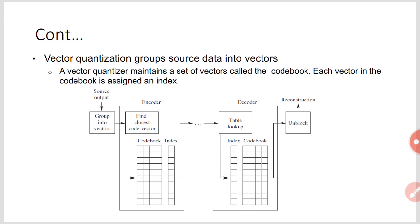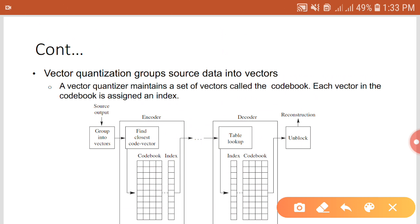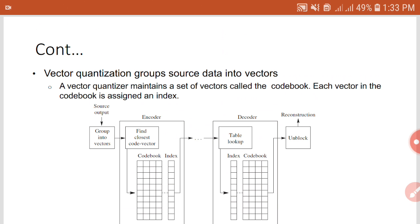Each code vector in the codebook has an index. Instead of transmitting the closest code vector itself, the index of that closest code vector is transmitted to the decoder side. Compression is achieved because the index of the closest code vector is sent to the decoder instead of the original image block.